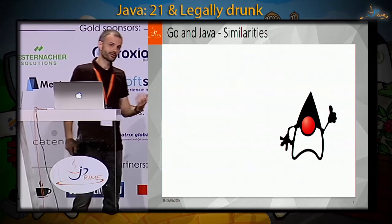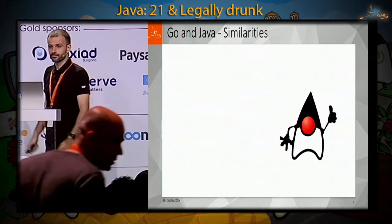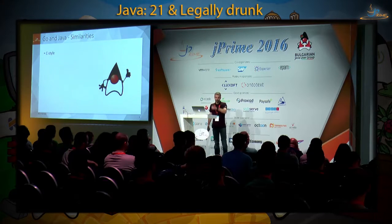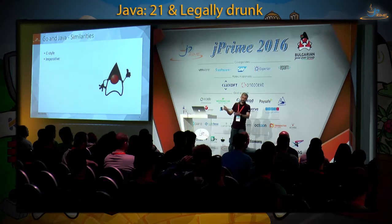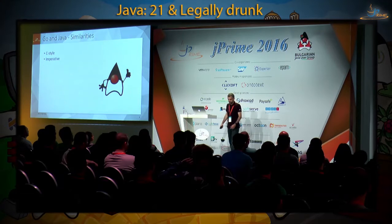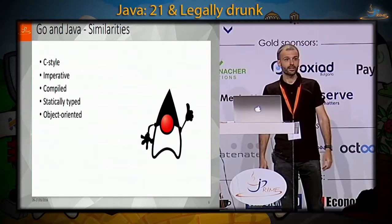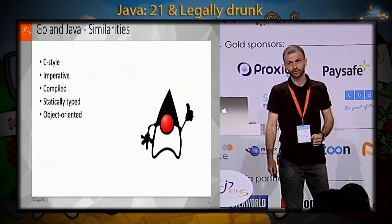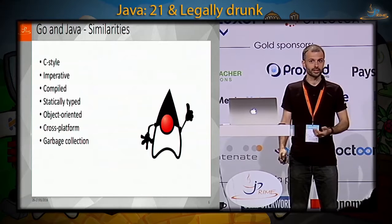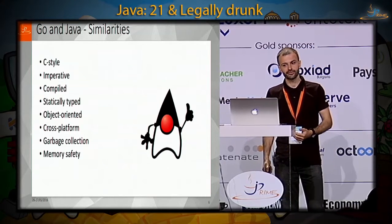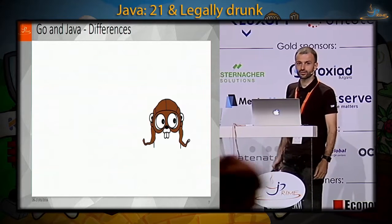Now let's look at similarities between Go and Java — there are a lot of them. Both are C-style, which makes the Go syntax largely familiar. Both are imperative, both are compiled, both are statically typed, both are object-oriented — although Go's approach to object orientation is really different as we'll see. Both are cross-platform, both have garbage collection, both have memory safety features, both have type assertions and reflection. However, there are also a lot of differences.